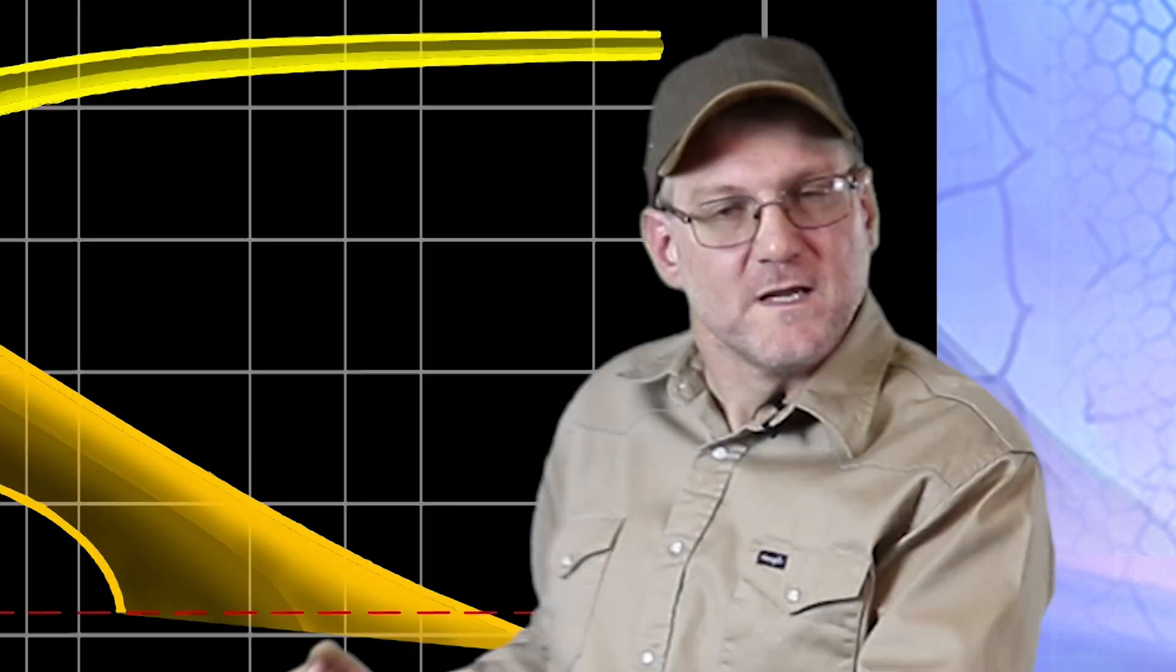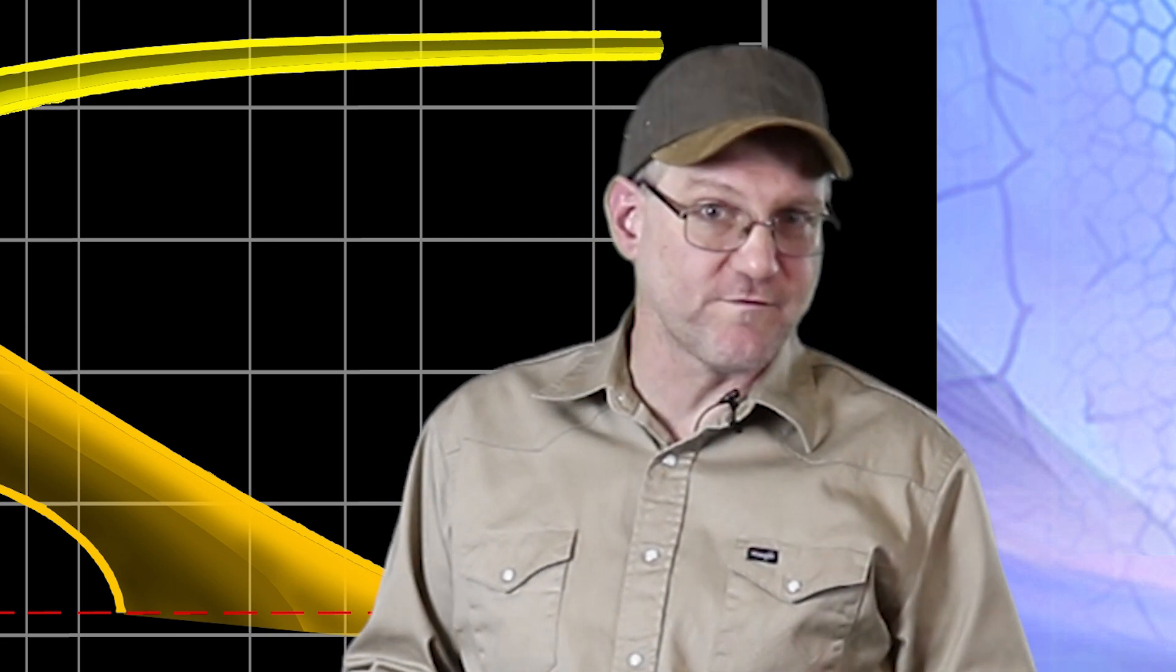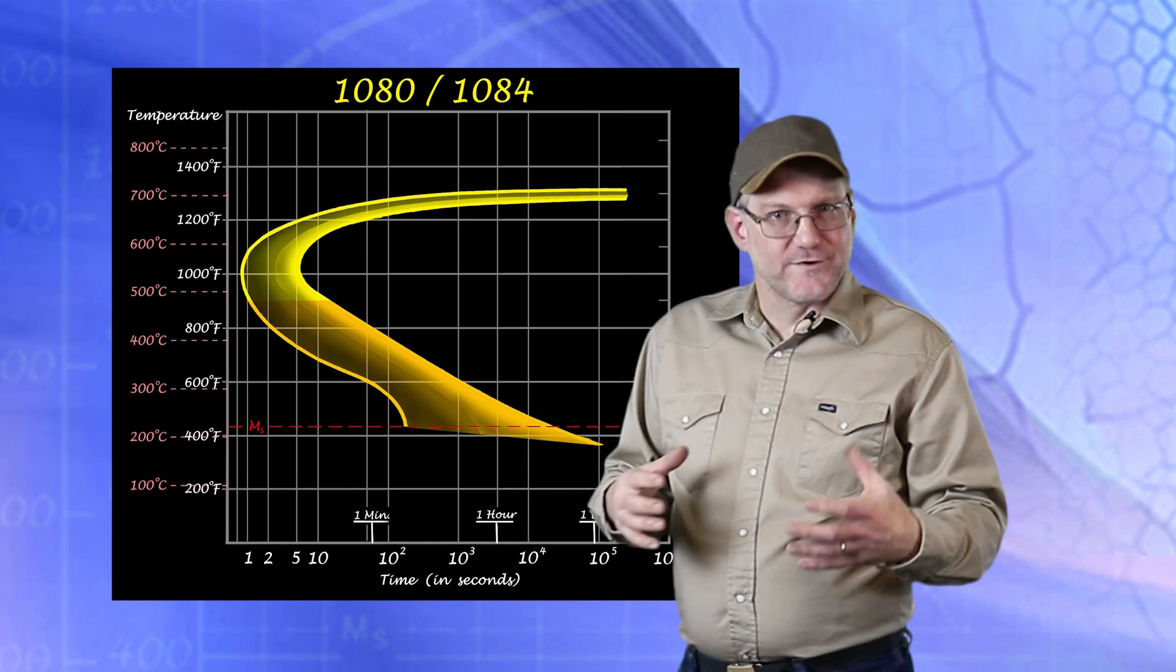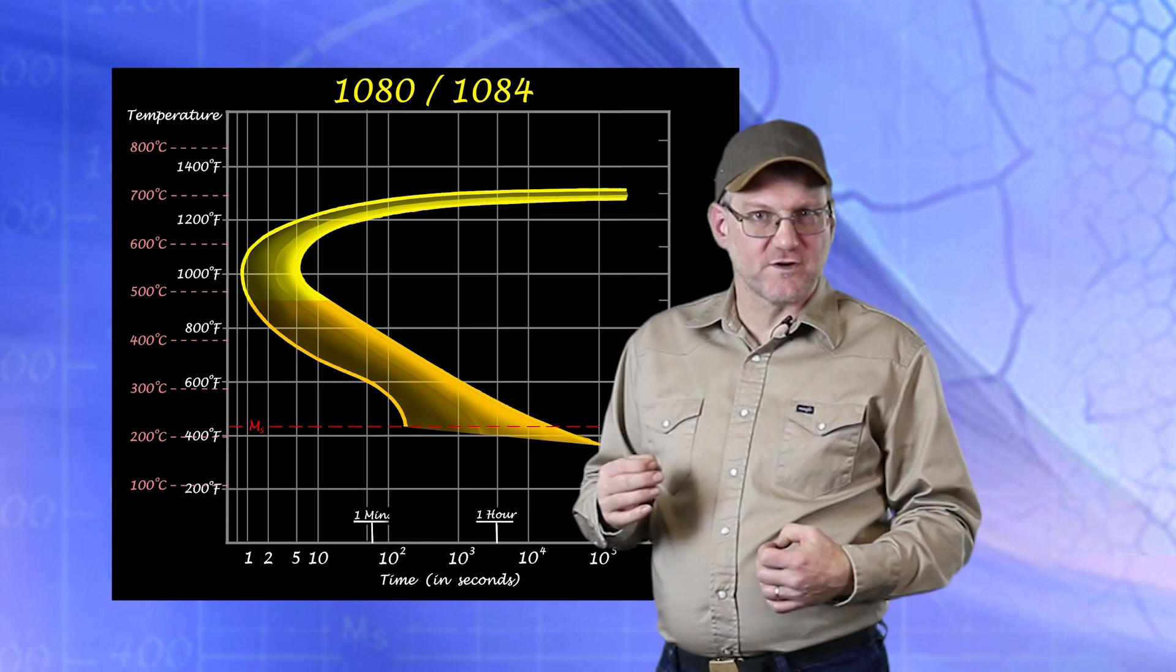This diagram was originally created by cooling austenitized samples of steel to a given temperature and recording the phases that were formed at that temperature. When put all together, this gives us a distinct picture of what you get with this steel as you cool it.